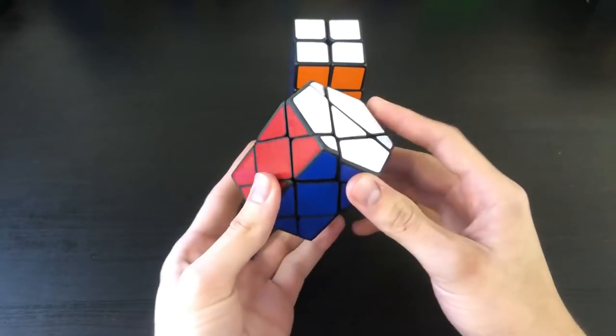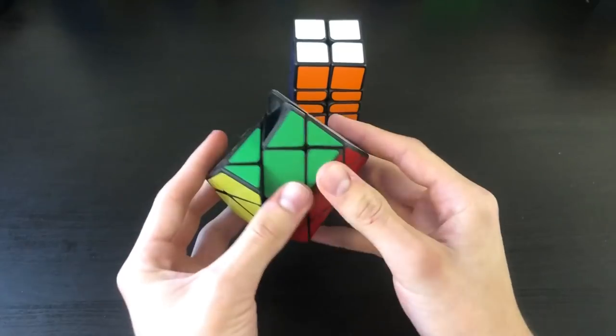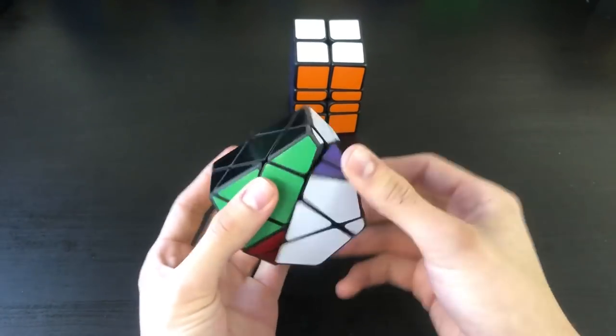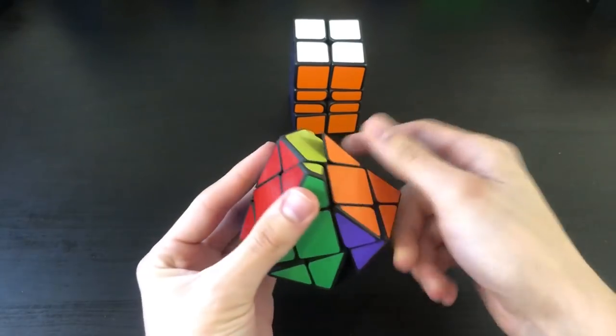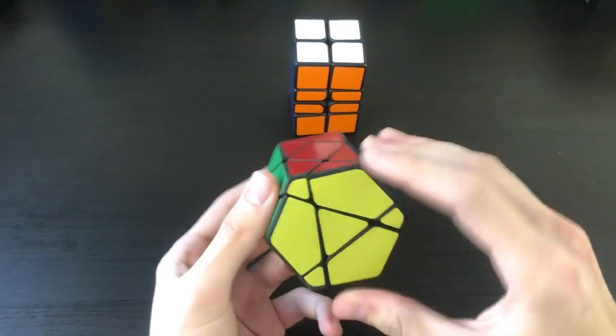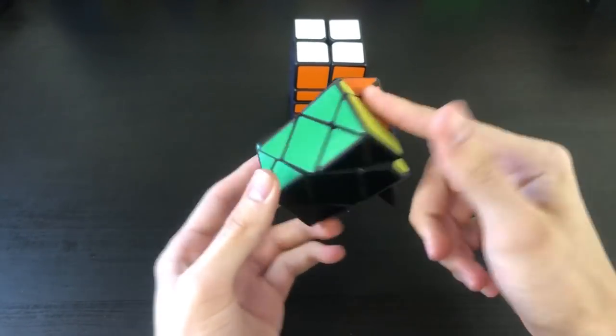So, as you can see here, this is sort of where the 3x3 cross would be, and then these are the three layers right here. So, I guess first turns, turns very smoothly, a lot smoother than I was expecting. This thing turns very well.